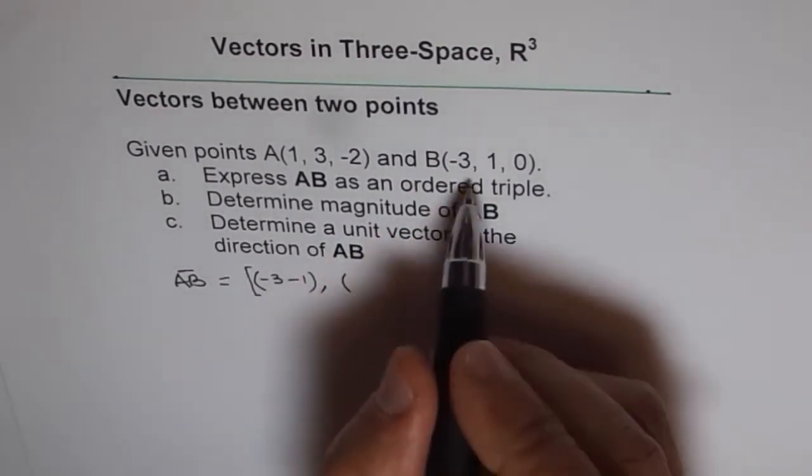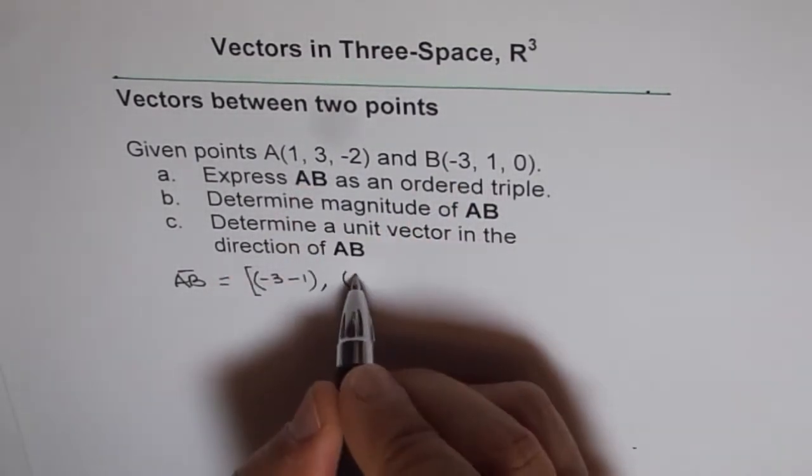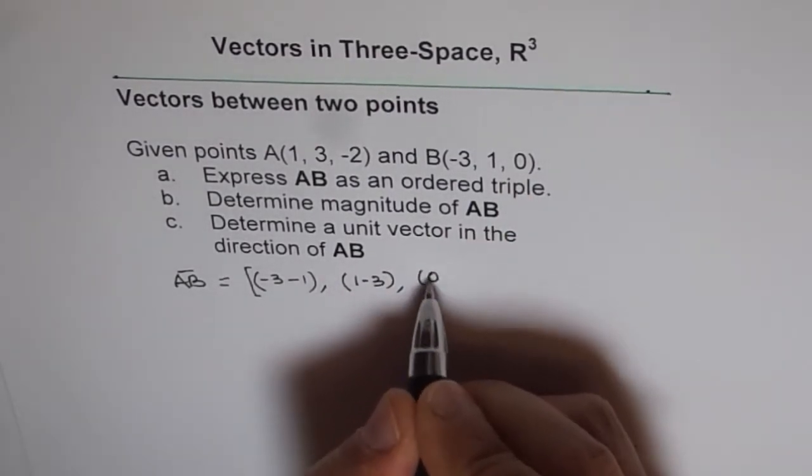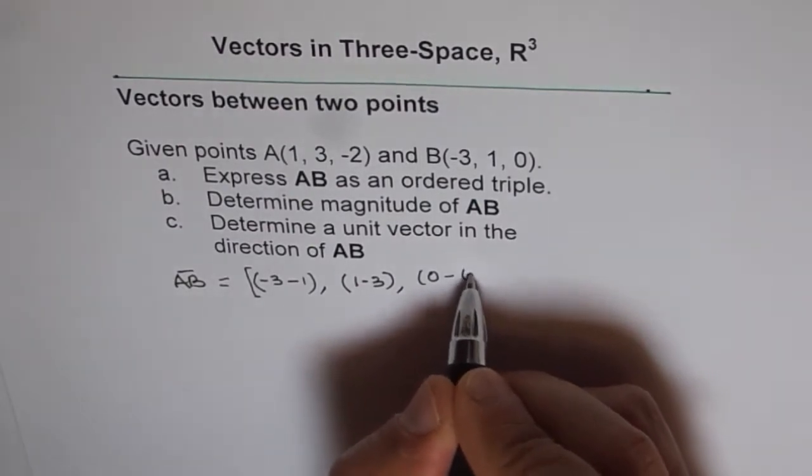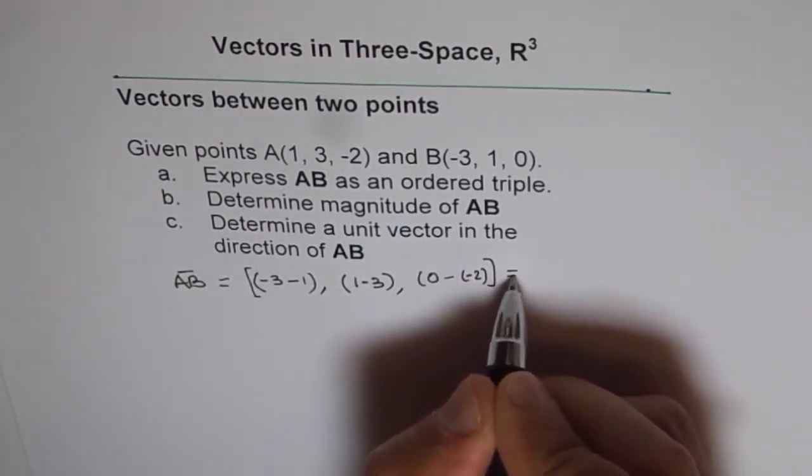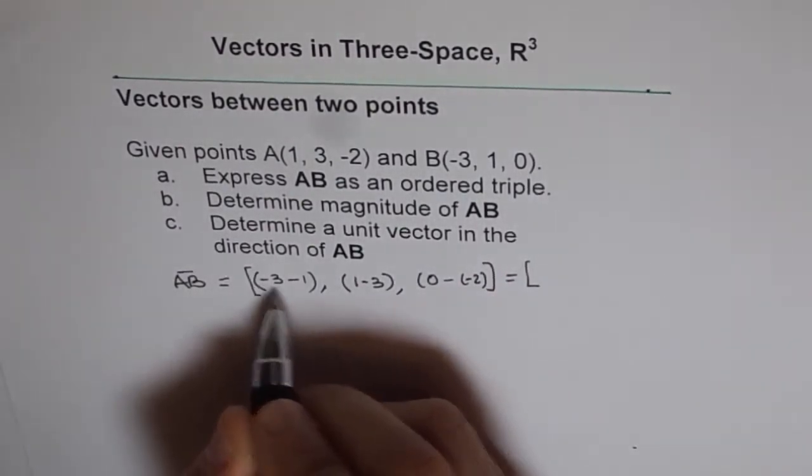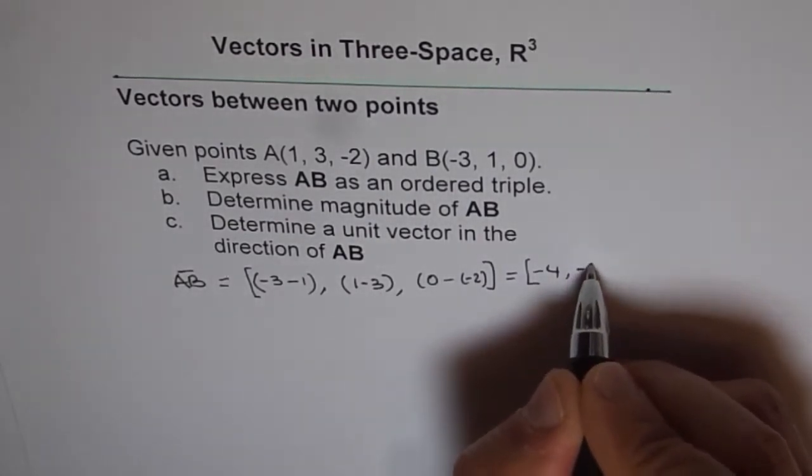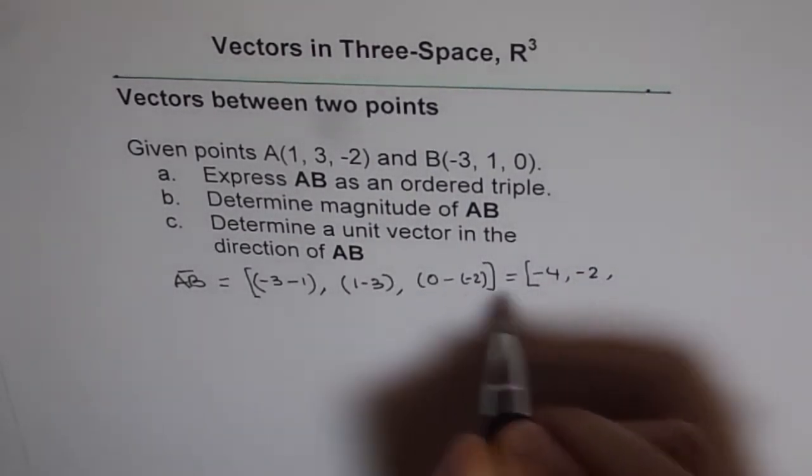And along z is going to be 0 minus minus 2. And that is equal to minus 4, minus 2, and plus 2.